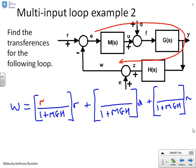So what's the forward path from R to W? So let's draw it. We go all the way through those blocks and through H and then we get to W. So the answer will be MGH. So the relationship between R and W is MGH over 1 plus MGH. What about the D? I'll use a different color for this. To get from D to W, I go through two blocks, which is G and H. So there we go, GH. What about N to W? Well, to get from N to W, I just go through one. So there, I'll put one.